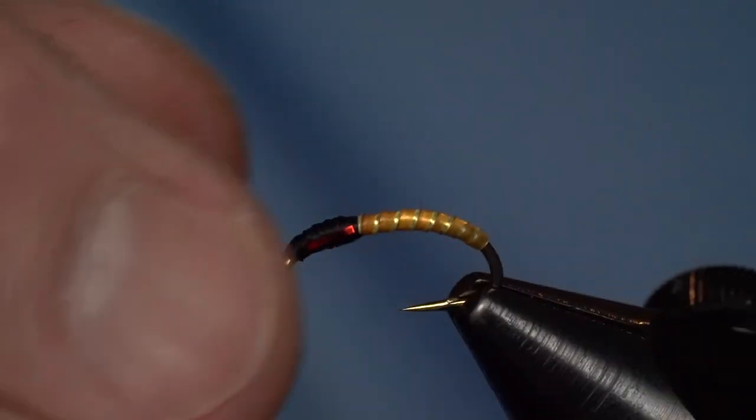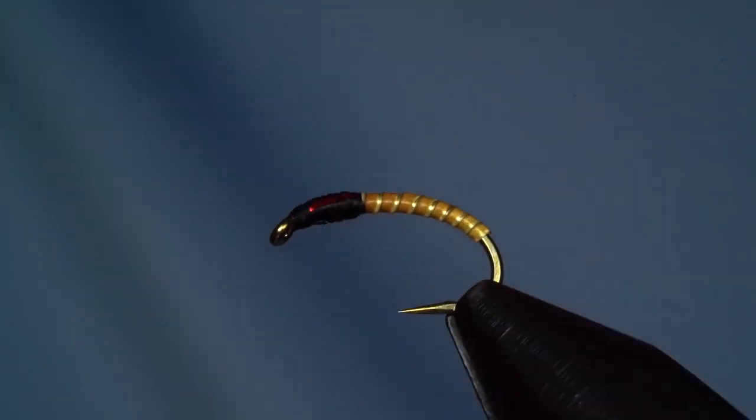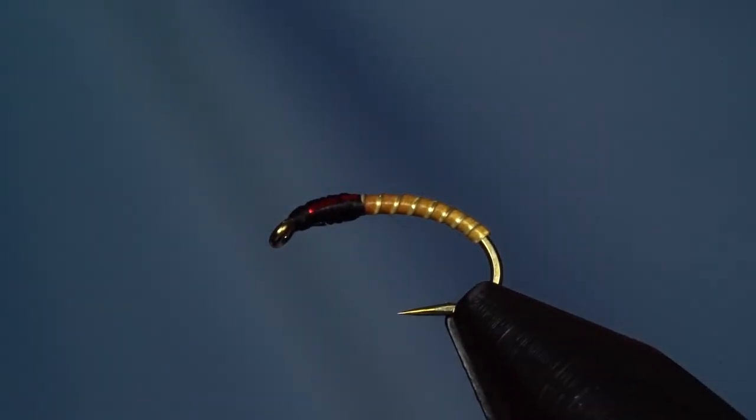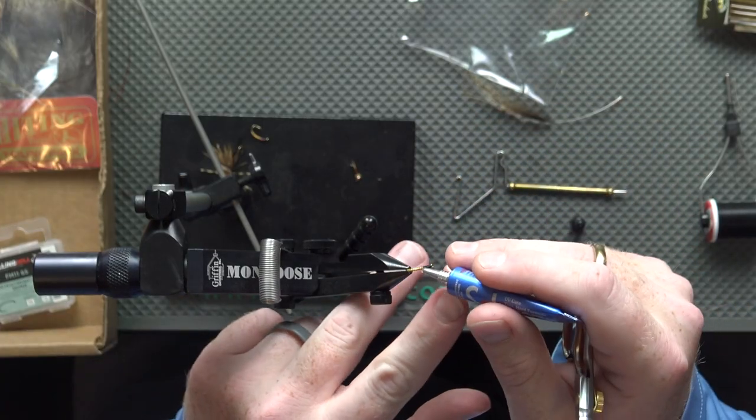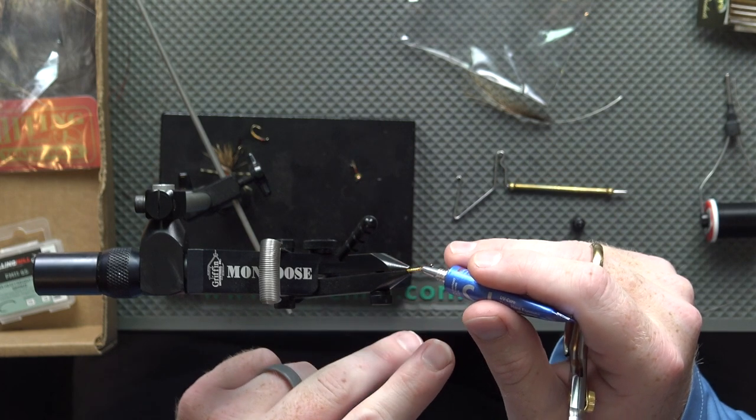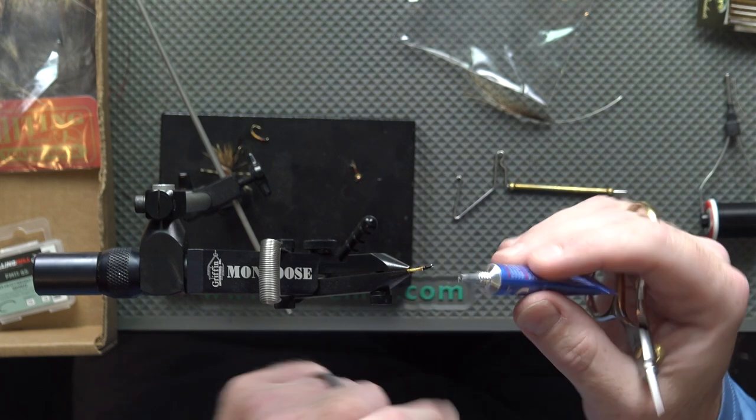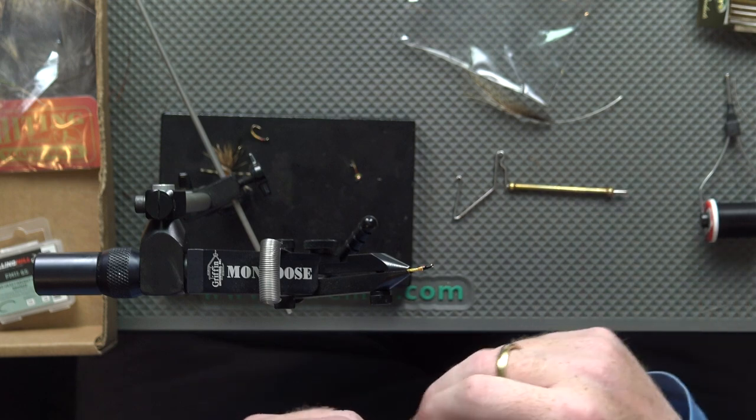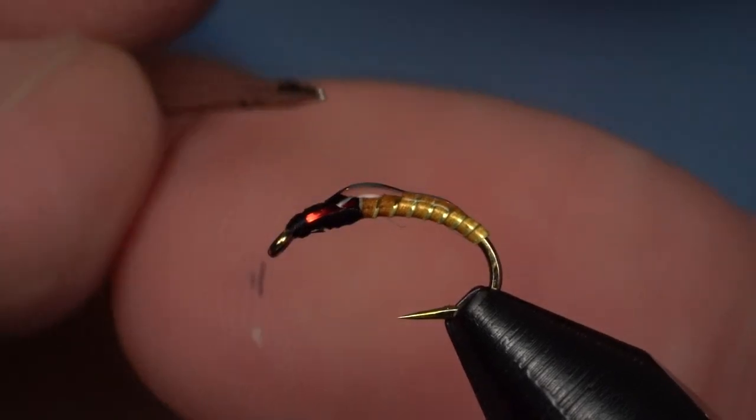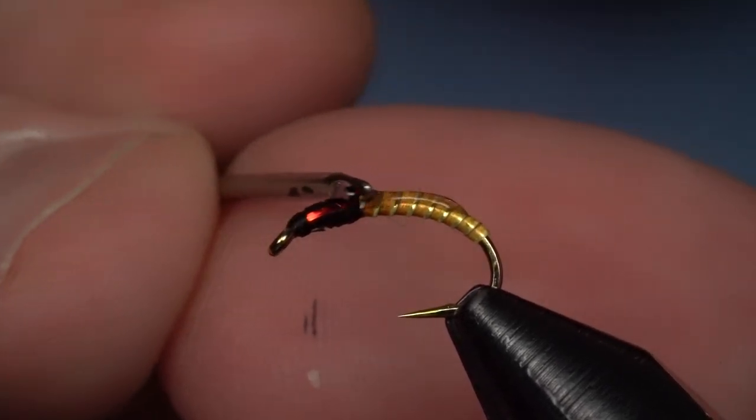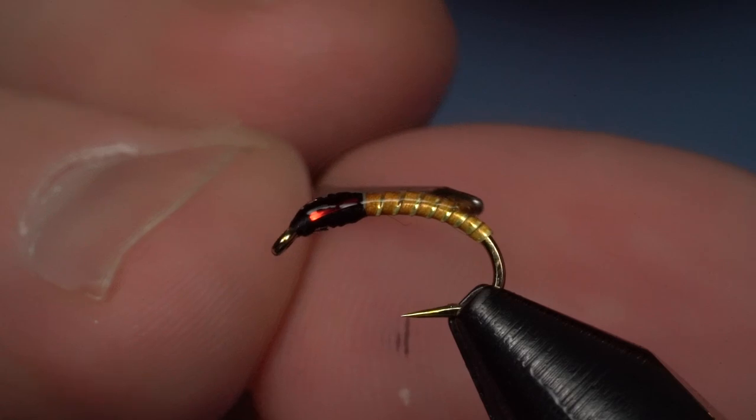Now we've got that secured. We'll clip out our extra and coat this to make it more durable. I've got my Solarez Thin, which is great for body coatings anytime you want it to soak into the thread a little bit. We'll add a little bit on top and use my bodkin to maneuver that around where I like it.